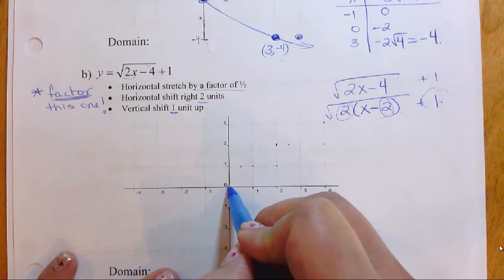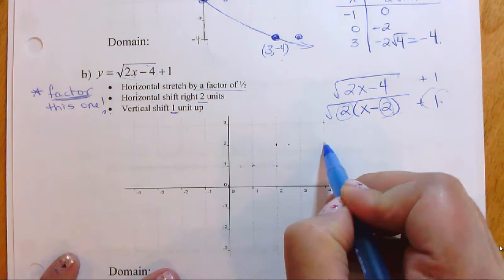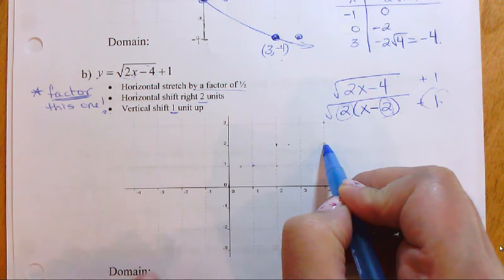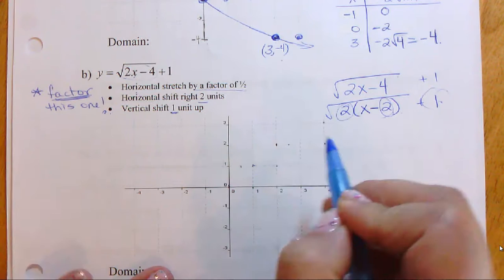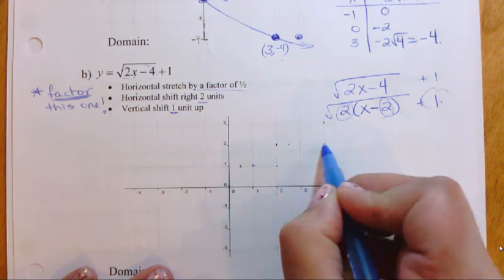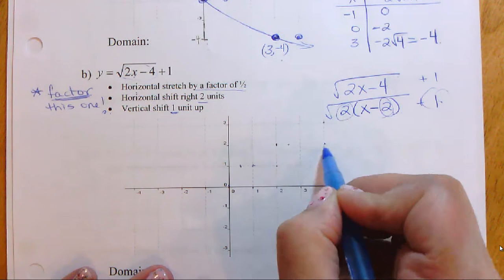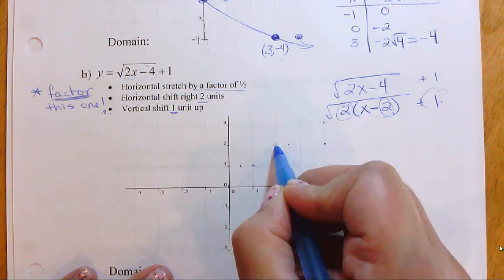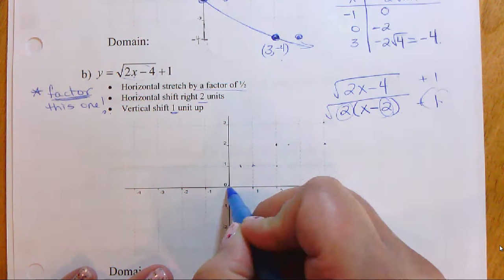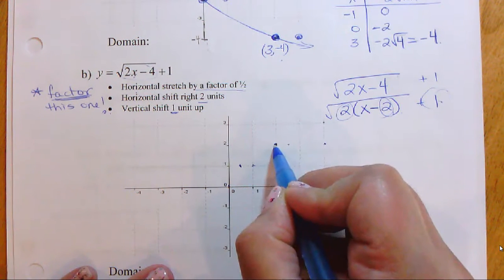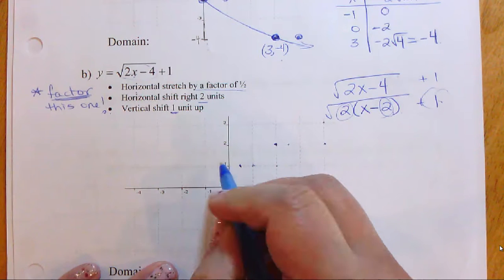Originally the parent function has points at (0,0), (1,1), and (4,2). Applying the horizontal stretch of one-half, all x values are cut in half: (4,2) becomes (2,2), giving us points at (0,0), (0.5,1), and (2,2).